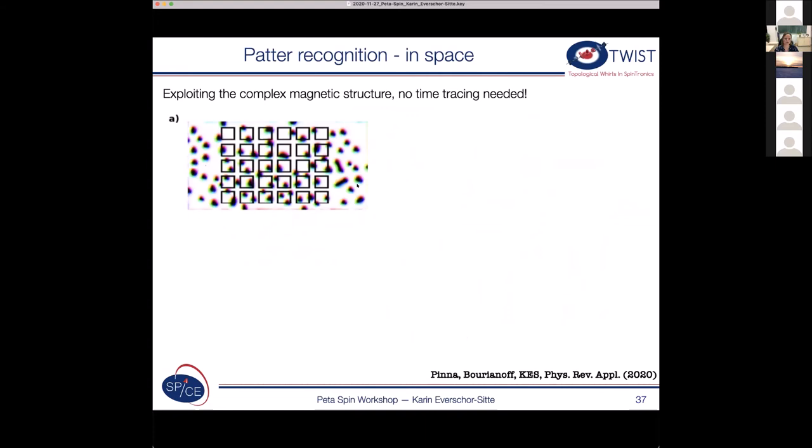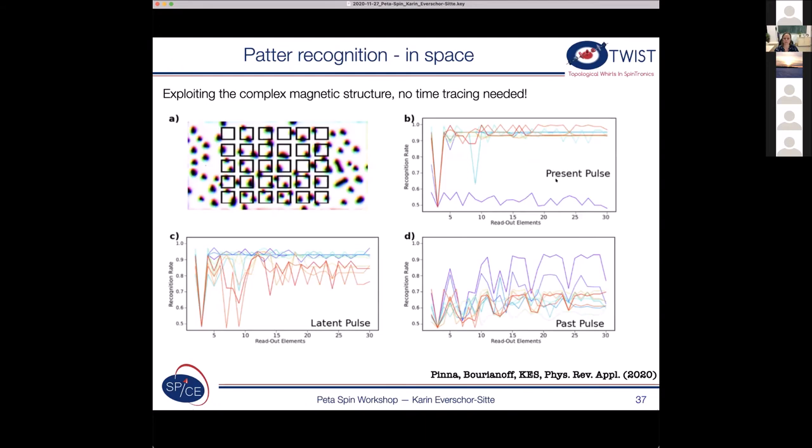Our system has also one more advantage. So we have more flexibility than just taking the time. So in principle, you could try to measure also locally. So then actually a single measurement of the magnetization is enough. And then you can also get information about the present, the past, and the latent pulse. And probably you need to mix these things. And thereby, you can even obtain a better value.